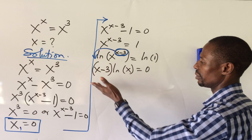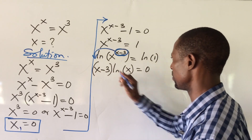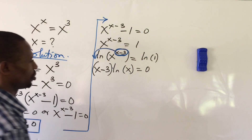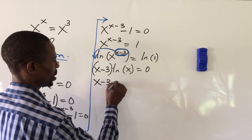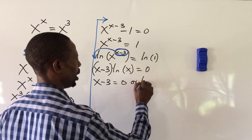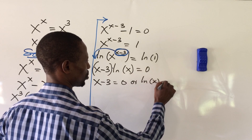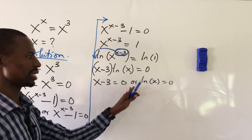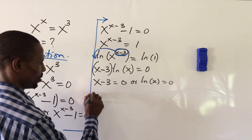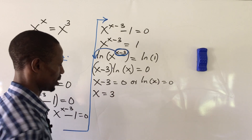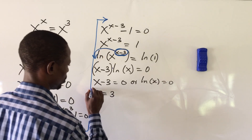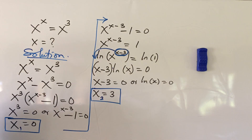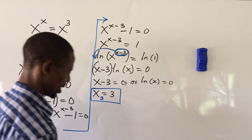Applying the logarithm power rule, we move the exponent forward: (x minus 3) times ln(x) equals 0. By the zero product rule, either x minus 3 equals 0, or ln(x) equals 0. From x minus 3 equals 0, we get x equals 3. This is the second root of our equation.